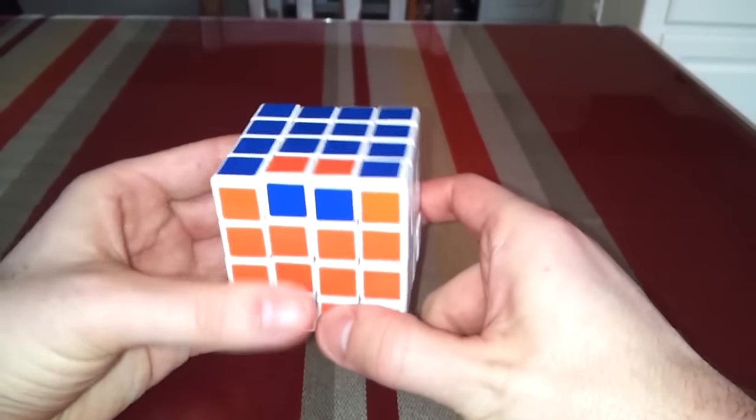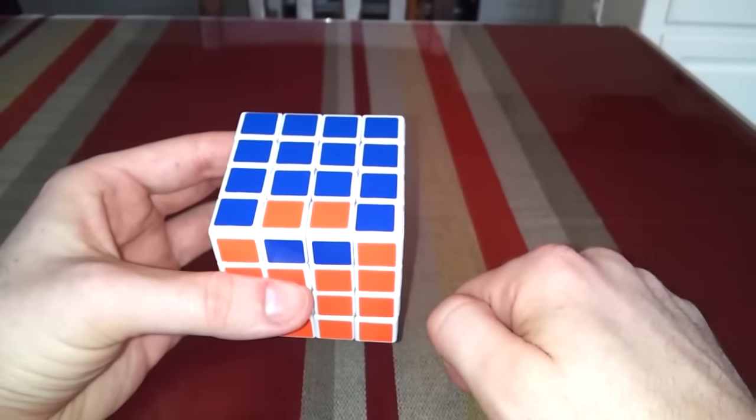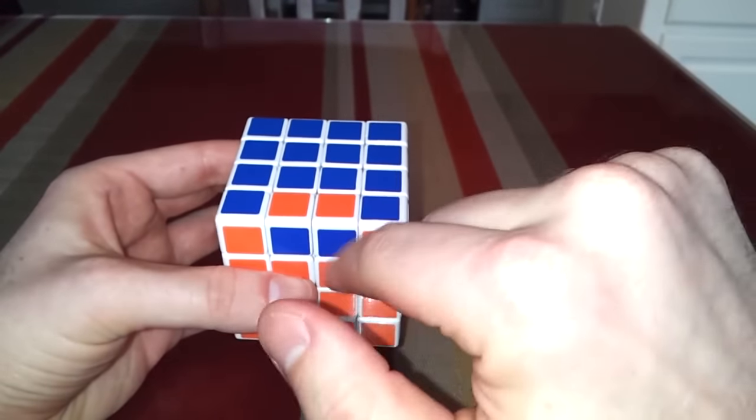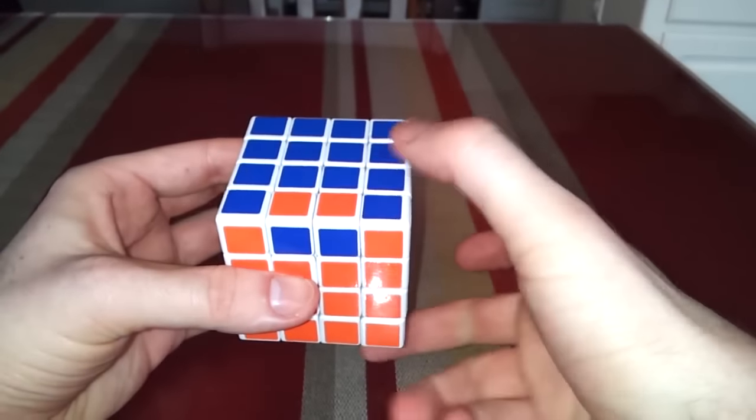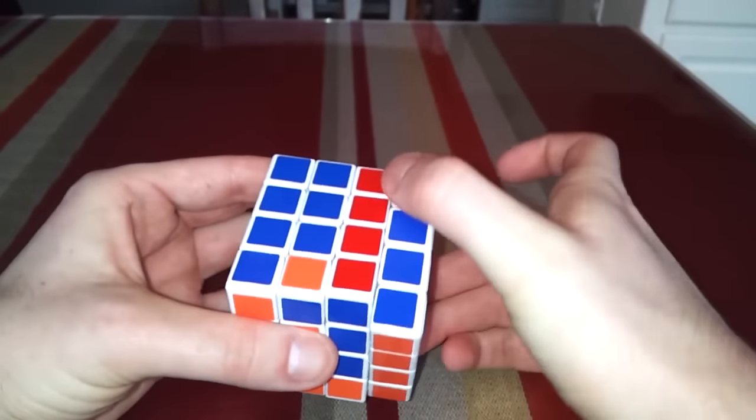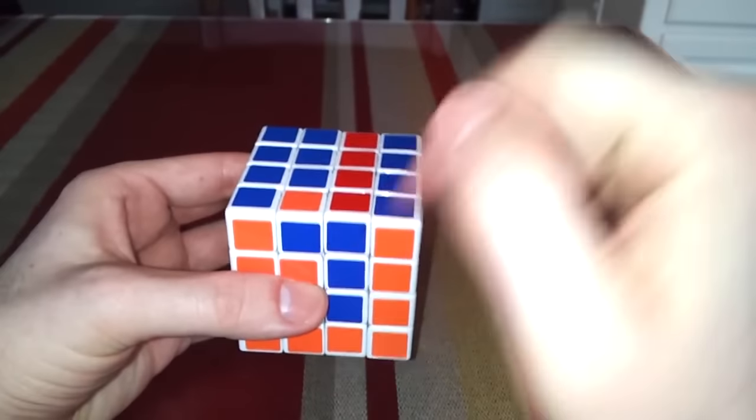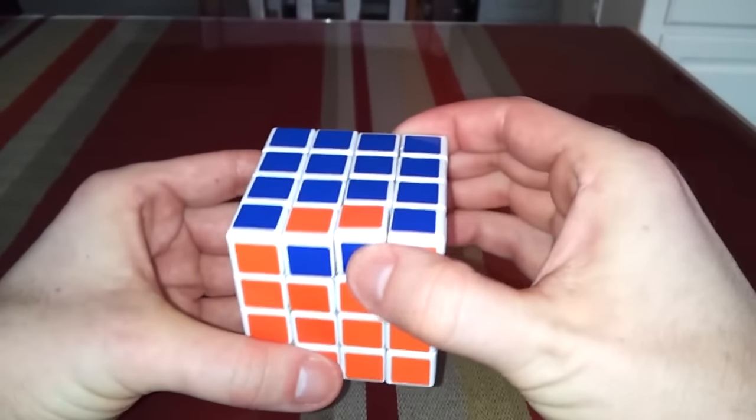So we're going to start by rotating this piece down. Before we get started, I'm going to show you how I rotate that. Just this inner layer needs to go down. So usually what I do, because I think it's easier, is to spin both layers and then spin this one back up. This has the effect of just moving this one down, but it does look like perhaps I moved two layers.